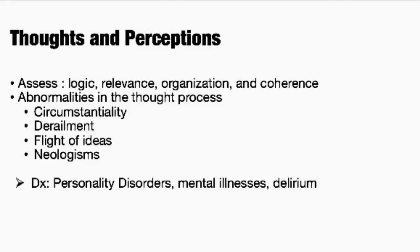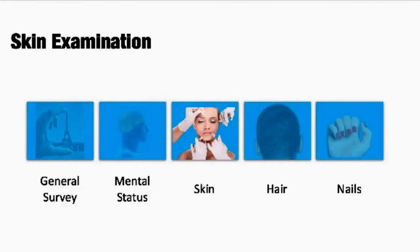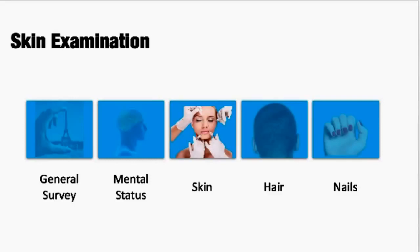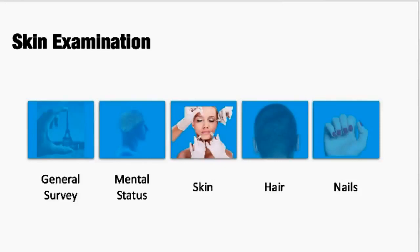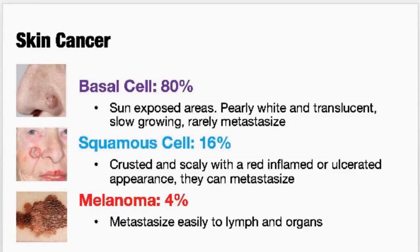Next, we're going to move on to skin. Skin is a very large topic. You need to be really familiar with some of the common skin conditions, be able to identify them visually, and also know how to describe them. Starting with skin cancers: basal cells are most common in sun-exposed areas, tend to be pearly white, translucent, very slow growing, and rarely metastasize. They make up about 80% of skin cancers. Squamous cells tend to be more crusty, scaly, red, inflamed, and ulcerated. These can metastasize, but very slowly, making up about 16% of skin cancers. The worst kind, melanomas, easily metastasize to lymph and organ tissue, but luckily only make up about 4% of skin cancers.